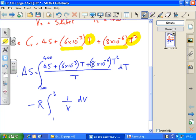Cv equals 45 plus 6 times 10 to the minus 3 times T, plus 8 times 10 to the minus 6 times T squared. Cv depends on temperature, so we've got to take that into account when we do the integral.